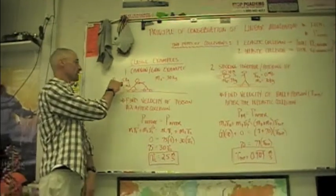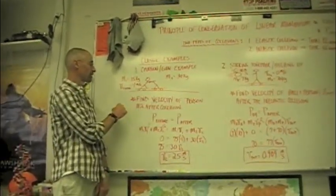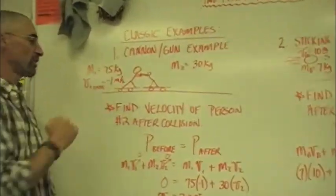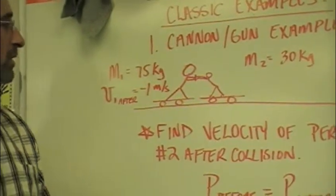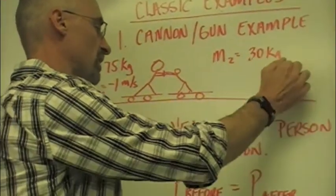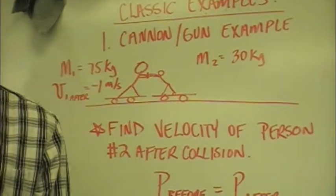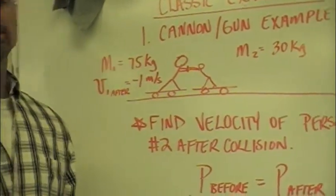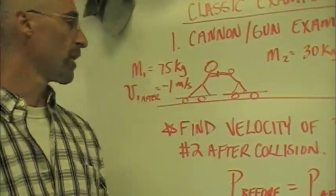Does this make sense? This guy has a mass of 75 kilograms, and we know afterwards he's going to be going back 1 meter per second. This guy has a mass of 30 kilograms, and what we're going to try to do is find the velocity of that person. Now, in this, I should have done a gun example probably, but guys,